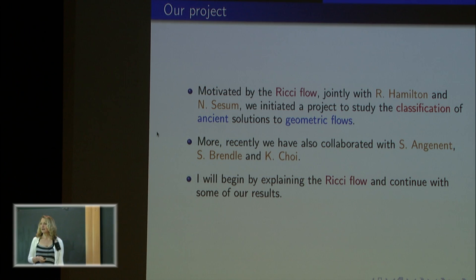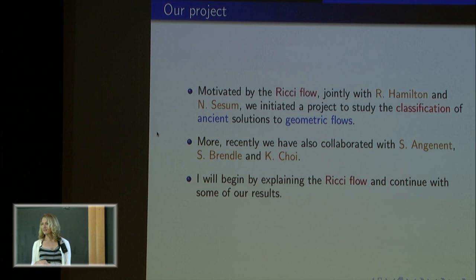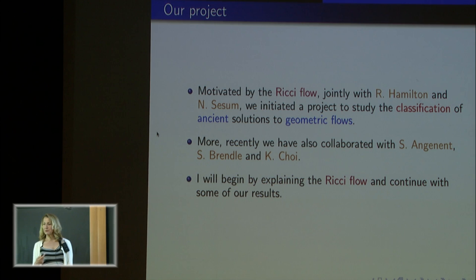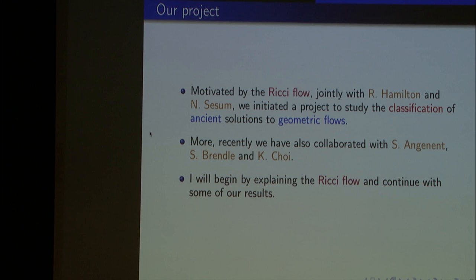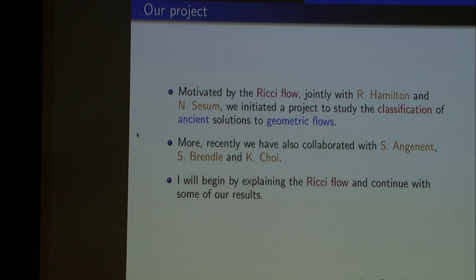Our original problem was to understand the ancient solutions and compact solutions of the three-dimensional Ricci flow. We soon realized that was so hard, so we started from the beginning, which was the curve shortening flow that I described yesterday. We cannot do the 3D, but let's do the two-dimensional Ricci flow. And as you learned yesterday, in the two-dimensional Ricci flow there is a conformal invariance, and you can write the equation as a nice quasi-linear diffusion equation. Things are not so bad.